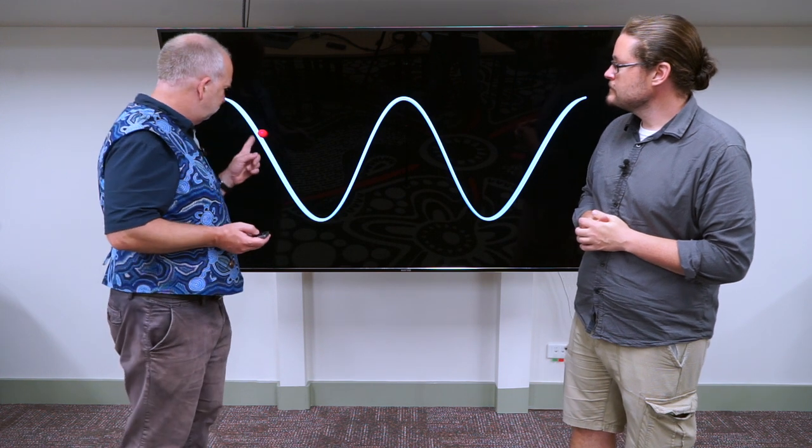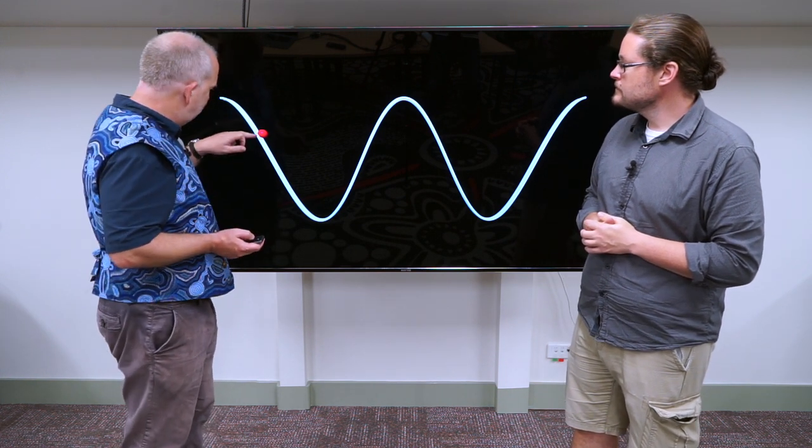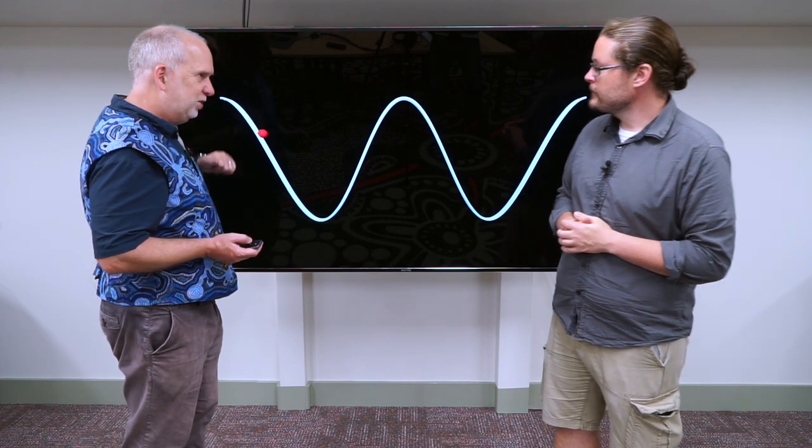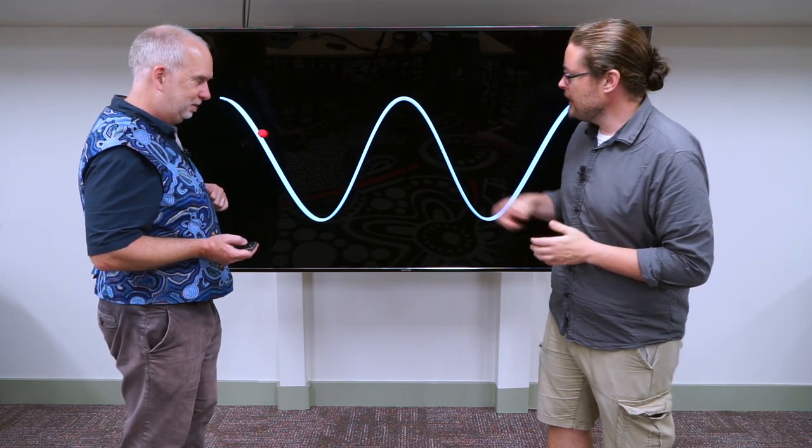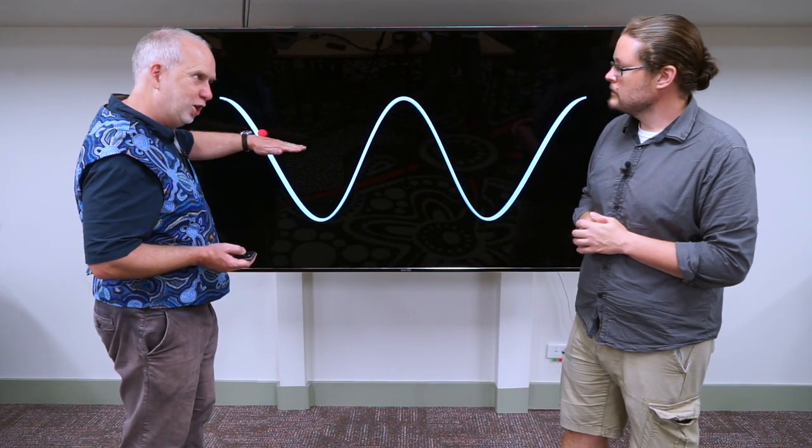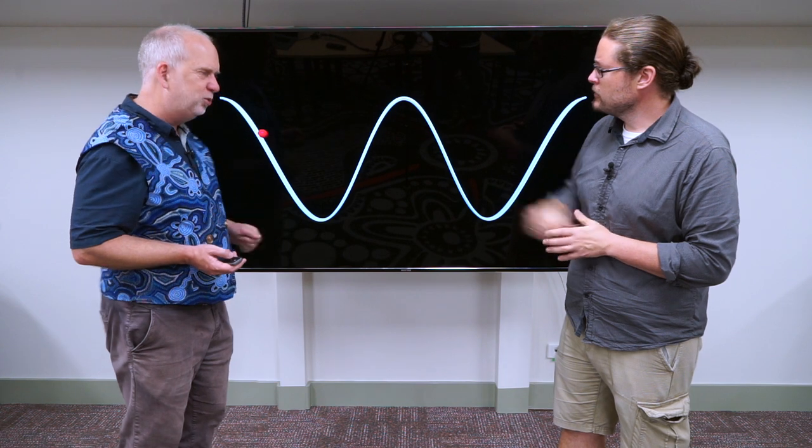But now what would happen if we started only here? So now, if you started at rest there, let's say I just took this ball and let go. Where's the energy level going to be? Well, it's going to have to be, well if we have nothing else, then it's going to have to be here, right? That's right. There's no kinetic energy, because you're letting it go stationary, so the energy level's going to be there. So what's it going to do?